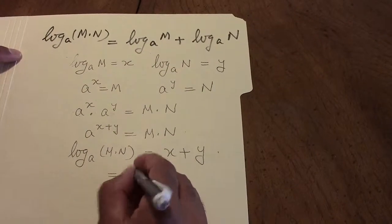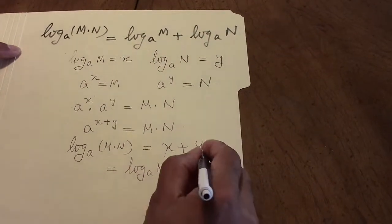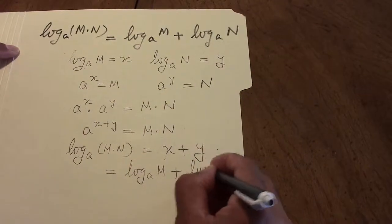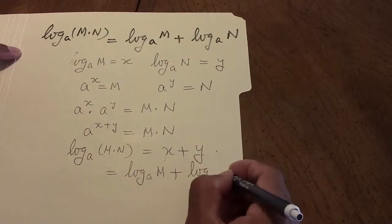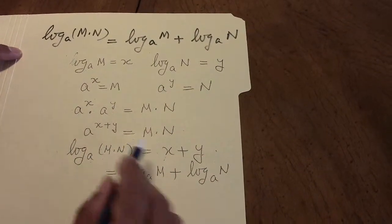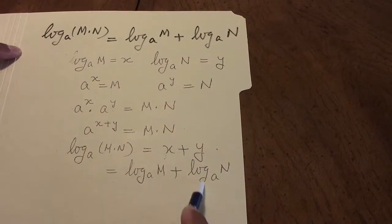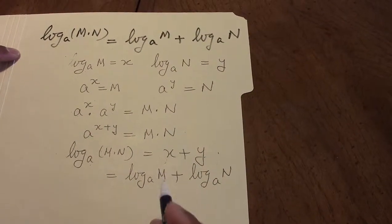Because x is log to the base a of m and y is log to the base a of n, so log to the base a of m times n is log to the base a of m plus log to the base a of n, and we have proved the theorem.